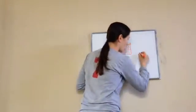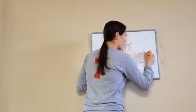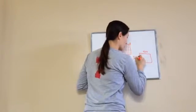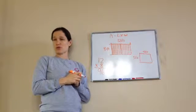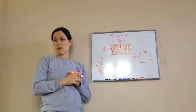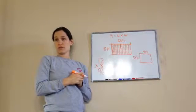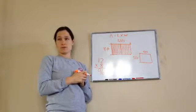Let's do a smaller one: 4 feet times 3 feet. How many tiles are going to be on the inside? That would be 4 times 3 — that's 12.